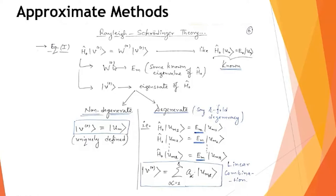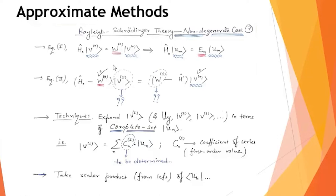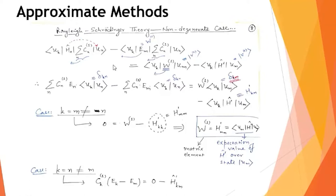Using the scalar product technique on the first-order equation, we find that W₁, the first-order correction to the energy eigenvalue, is nothing but the expectation value of H′ computed using the eigenfunction u_m. Since u_m is already known, if we know H′ we can obtain W₁ simply by computing this expectation value.